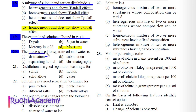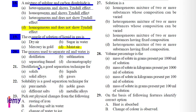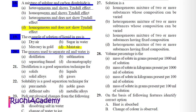Question 20: The process used to separate oil and water is: A) Distillation, B) Sublimation, C) Separating funnel, D) Chromatography. Correct answer is C) Separating funnel. Since oil is less dense than water, it forms the upper layer, and the mixture can be separated using a separating funnel.